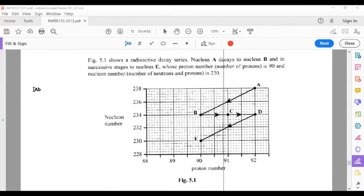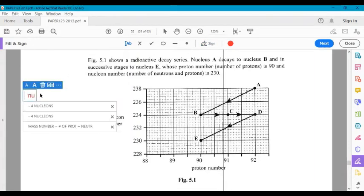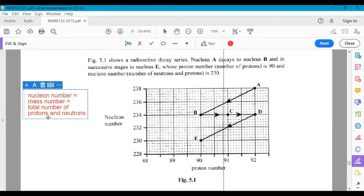Before we get to those questions, there's some vocabulary you want to make sure that you know. So you see the word nucleon there and you might be like, what is that? I was taught proton or atomic number and mass number. Nucleon number means the same thing as mass number, which is the total number of protons and neutrons. So let's keep that in mind.